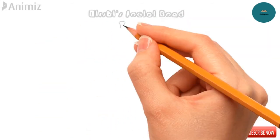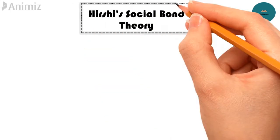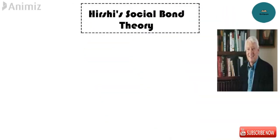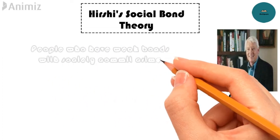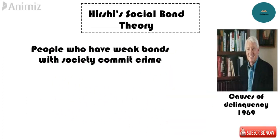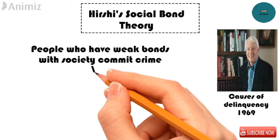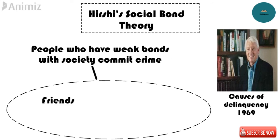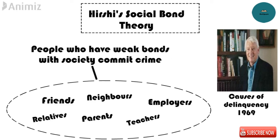One of the famous social control theories is Hirschi's Social Bond Theory. Travis Hirschi's Social Bond Theory came from his highly influential book 'Causes of Delinquency' in 1969. According to this theory, people commit crime because the bonds that attach them to society become weaker. In contrast, people don't commit crime because they fear their relationship with friends, neighbors, parents, teachers, relatives, and employers will break down.